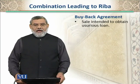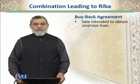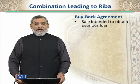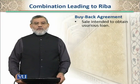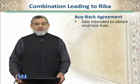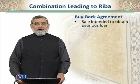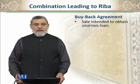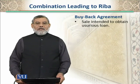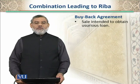So A buys that sugar from B for one hundred thousand rupees on one year's credit. This means that one hundred thousand rupees is outstanding — it is a debt against A, which he is to pay after one year. After this, A immediately tells B: 'I don't need the sugar; I will resell this sugar back to you at a lower price — eighty thousand — for cash.' And immediately A takes eighty thousand rupees cash from B.